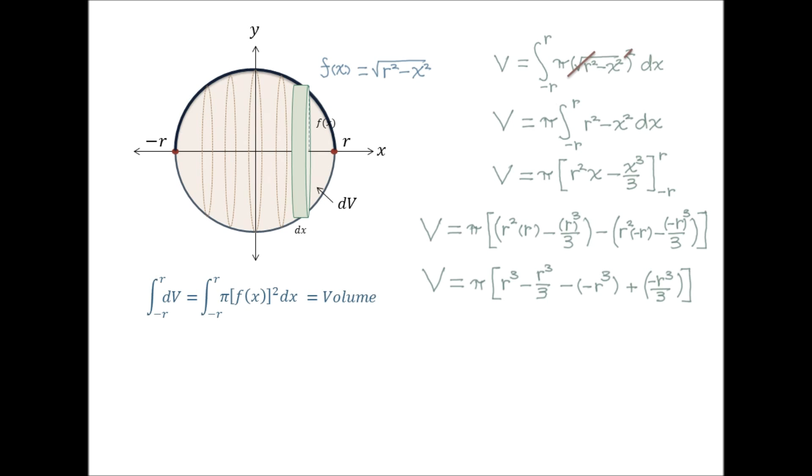And seeing that r cubed minus negative r cubed is 2r cubed, and that negative r cubed over 3 minus r cubed over 3 is negative 2r cubed over 3, we then get the following.